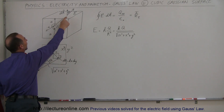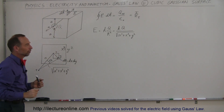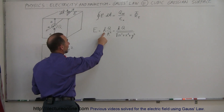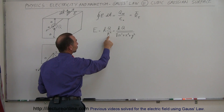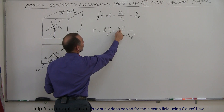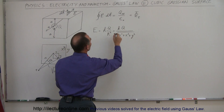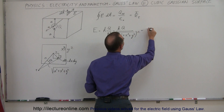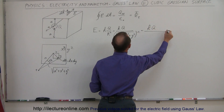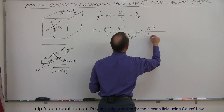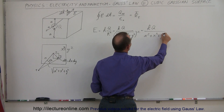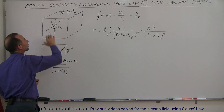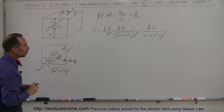The electric field strength at that point equals K times Q divided by R squared, where R is that diagonal distance. So we can write this as KQ divided by the quantity A squared plus x squared plus y squared. That is the electric field strength anywhere on one of the faces of the cube.